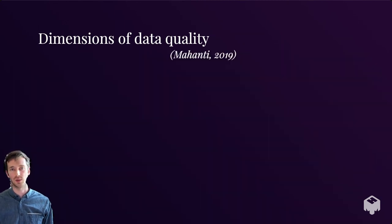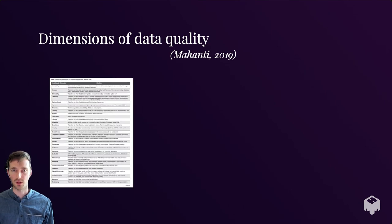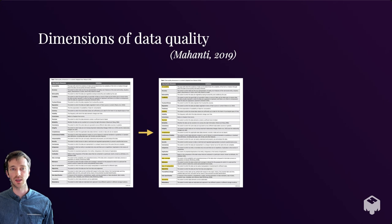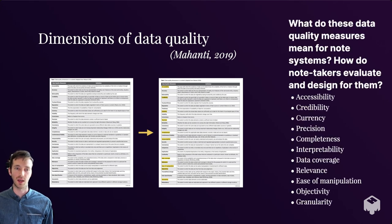Another example is Mahanti's 2019 list of dimensions of data quality. She captured quite a few, and I've extracted some that seem particularly important for note-taking. I want to ask in the future: what do these data quality measures mean for note systems and how do note-takers themselves evaluate, think about, and design for them? Issues like accessibility, how easy it is to query and find information in your notes, or data coverage, whether your notes capture the full extent of the world you're trying to capture. Do note-takers think about these things? And if not, what would that mean for the quality of notes they're capturing?